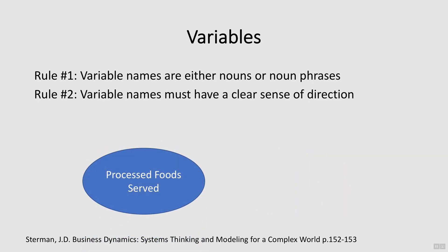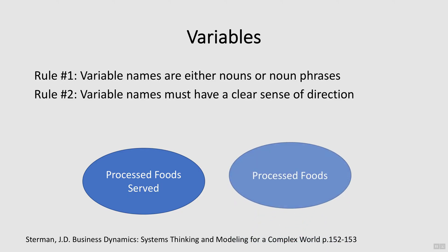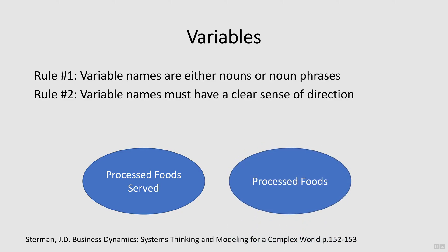Similarly, processed foods served instead of just processed foods. Processed foods is ambiguous in its meaning and direction. However, if we add the word served to the variable, now we can see a clear sense of direction.